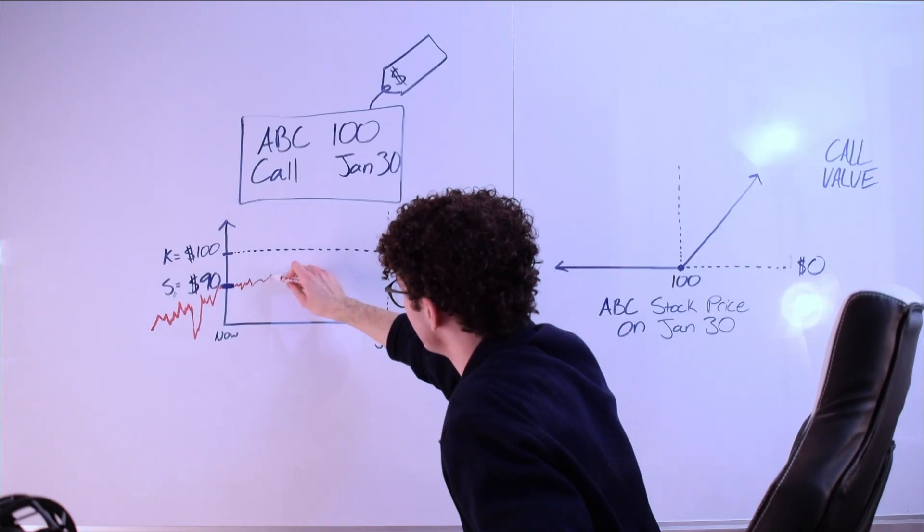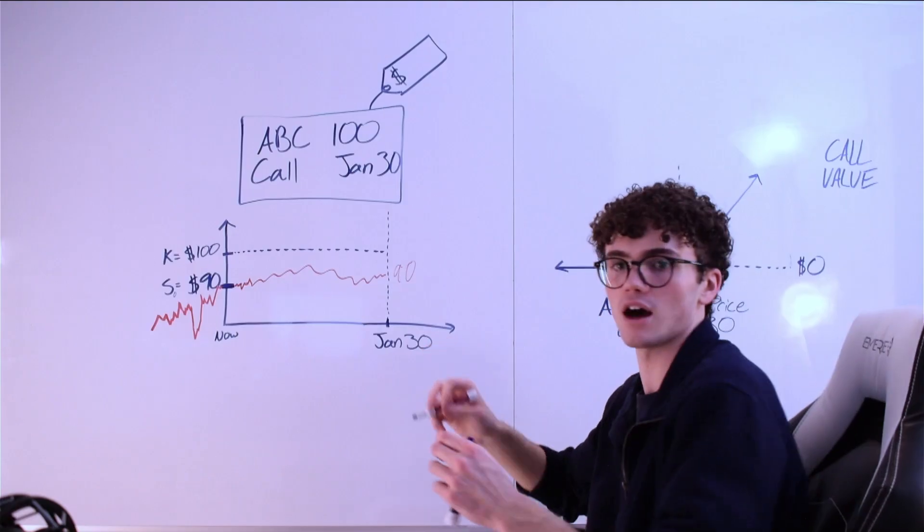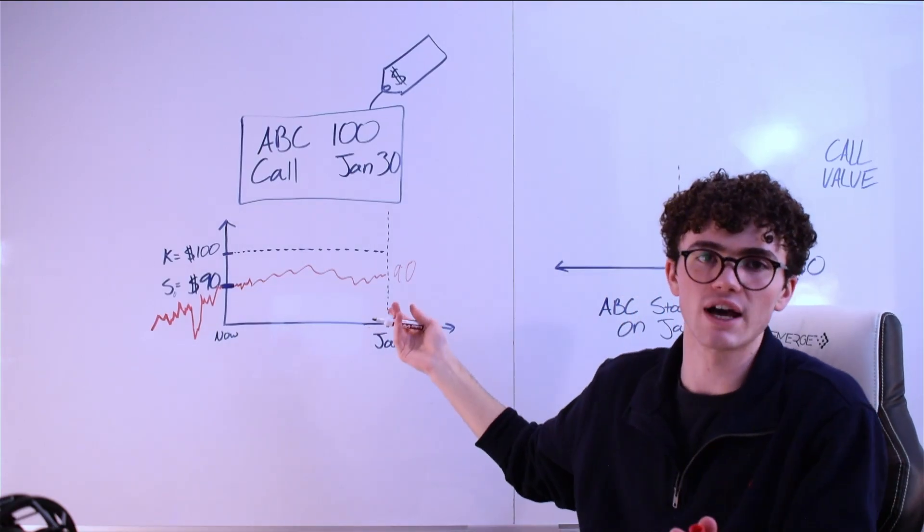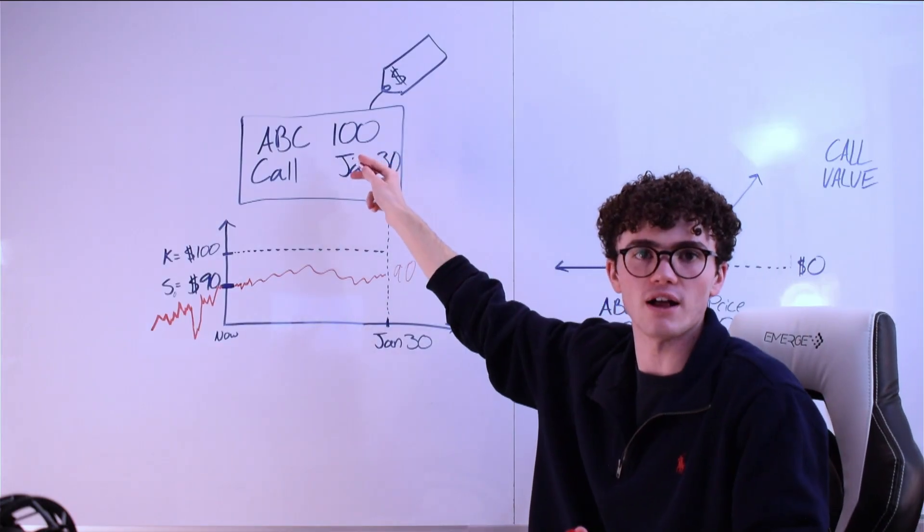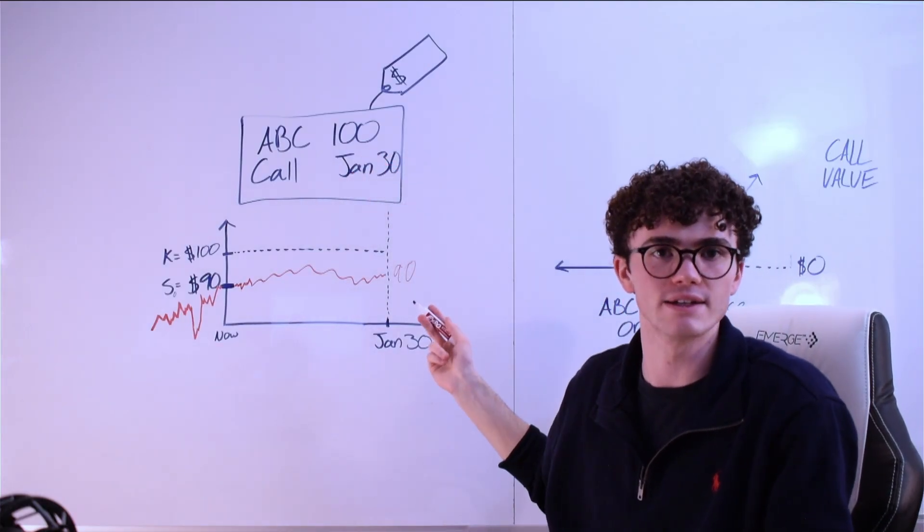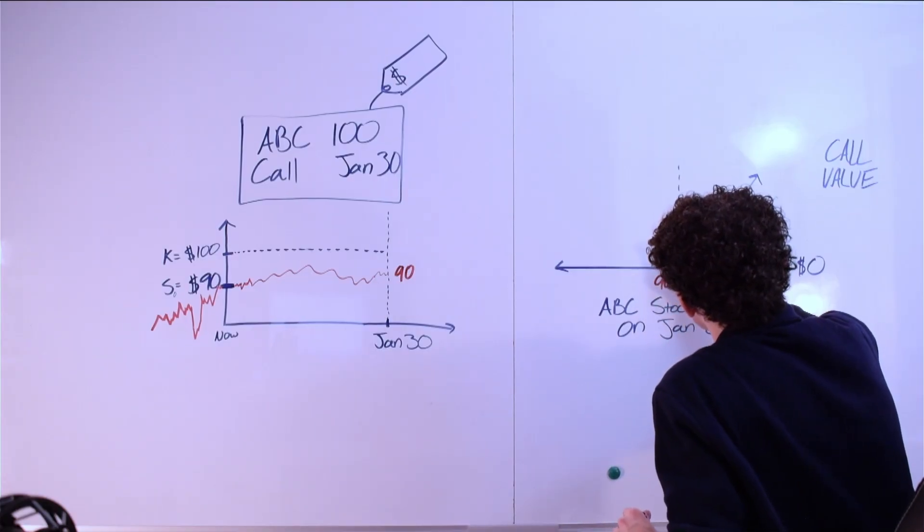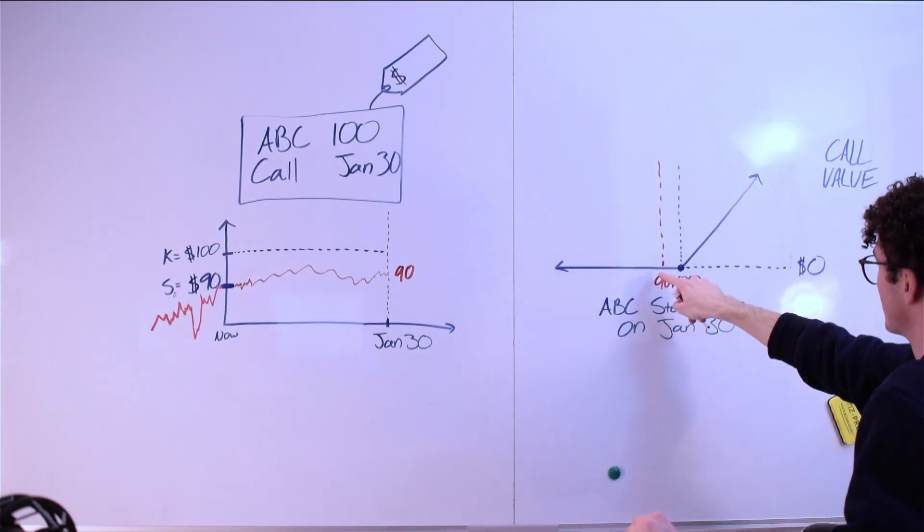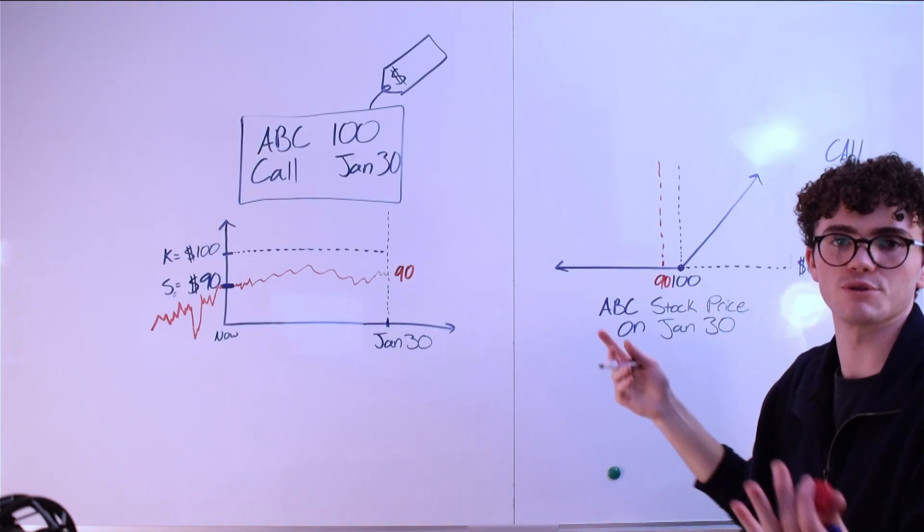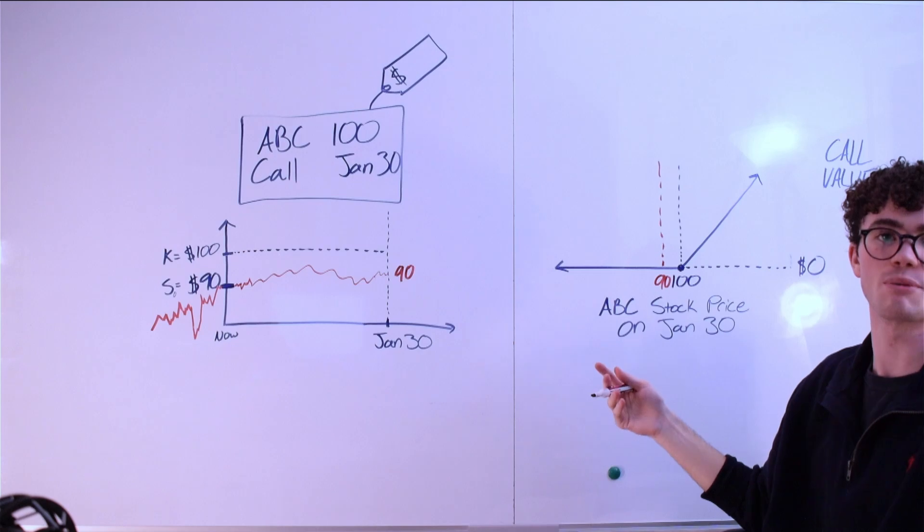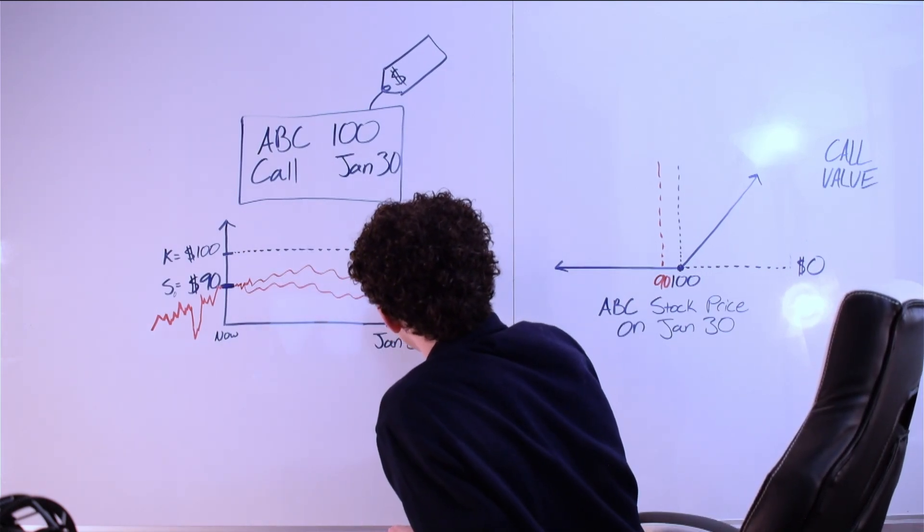If ABC stock, which is trading at $90, trades sideways until the expiration date and it expires at $90, there's no reason to exercise this option. There's no reason for me to buy ABC stock at $100 when I can just buy it in the market at $90. If ABC stock is trading at $90 on the expiration date, the option is worth $0. If it's trading any amount less than $90, the price of the option doesn't go negative, it just remains zero. If we plot another path here where ABC ends at $80, the price of the option is still $0 at expiration.